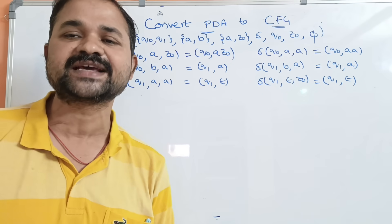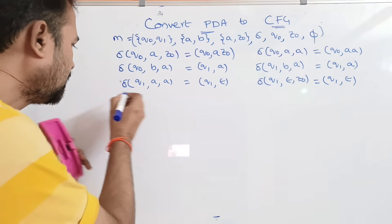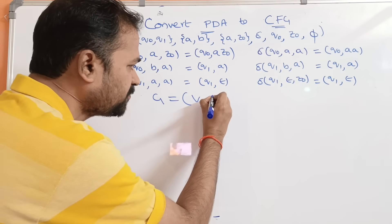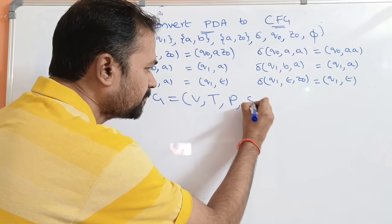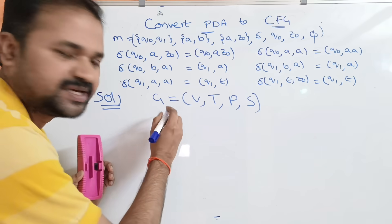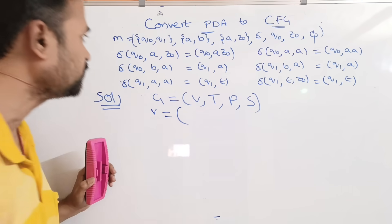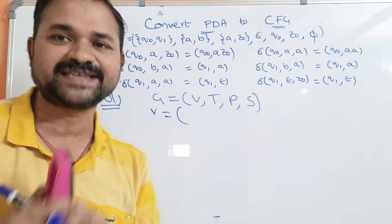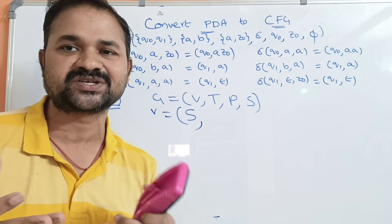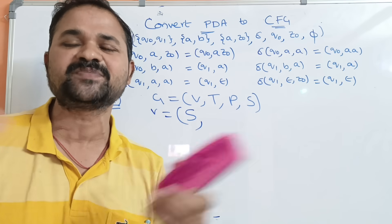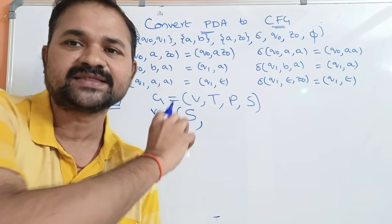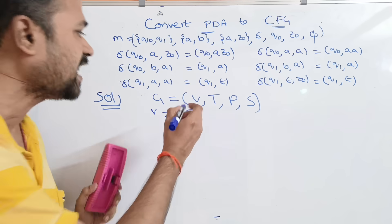Now we have to construct a CFG for this PDA. We know that CFG is represented with the help of 4 tuples: V, T, P, S. V means set of variables, which are the non-terminals. Non-terminals are always represented with the help of capital letters. So V equals S, comma, and we have to write the remaining variables.